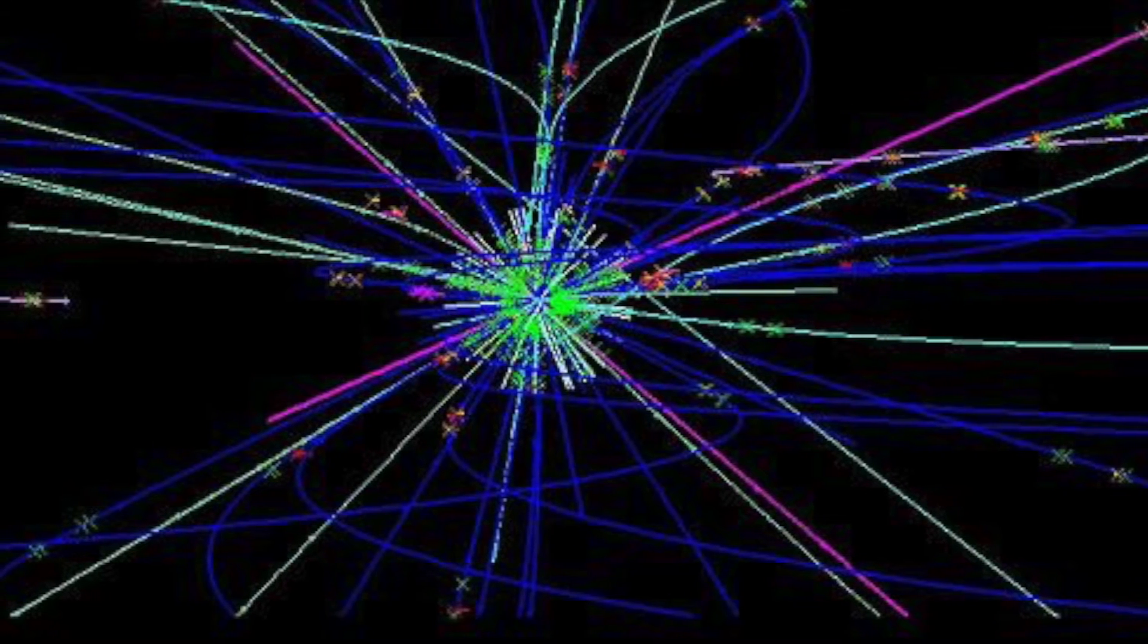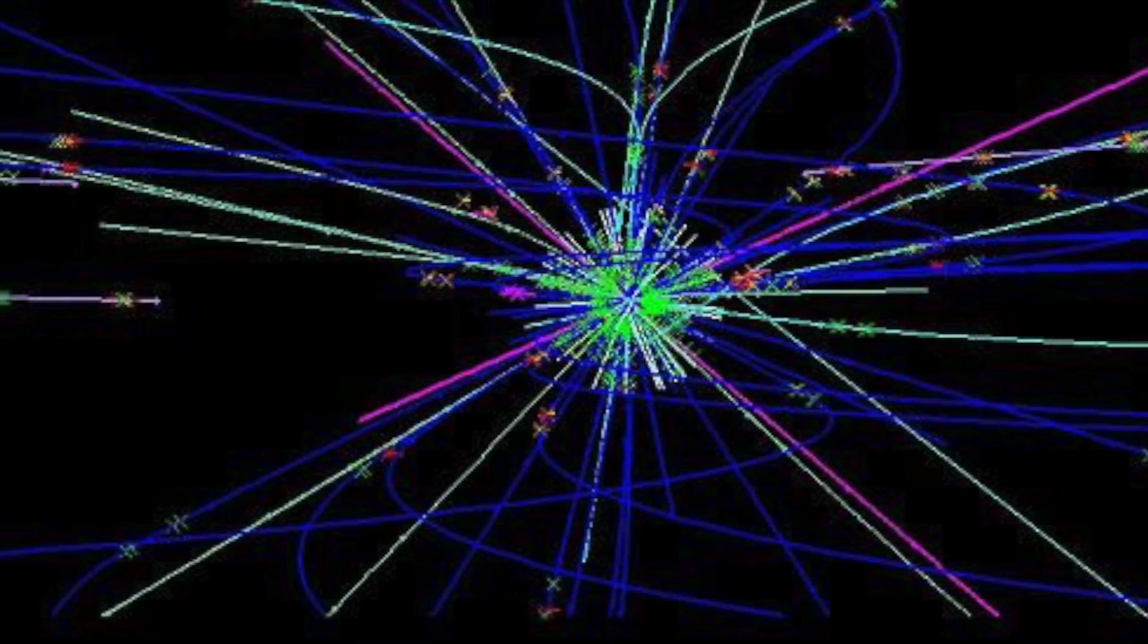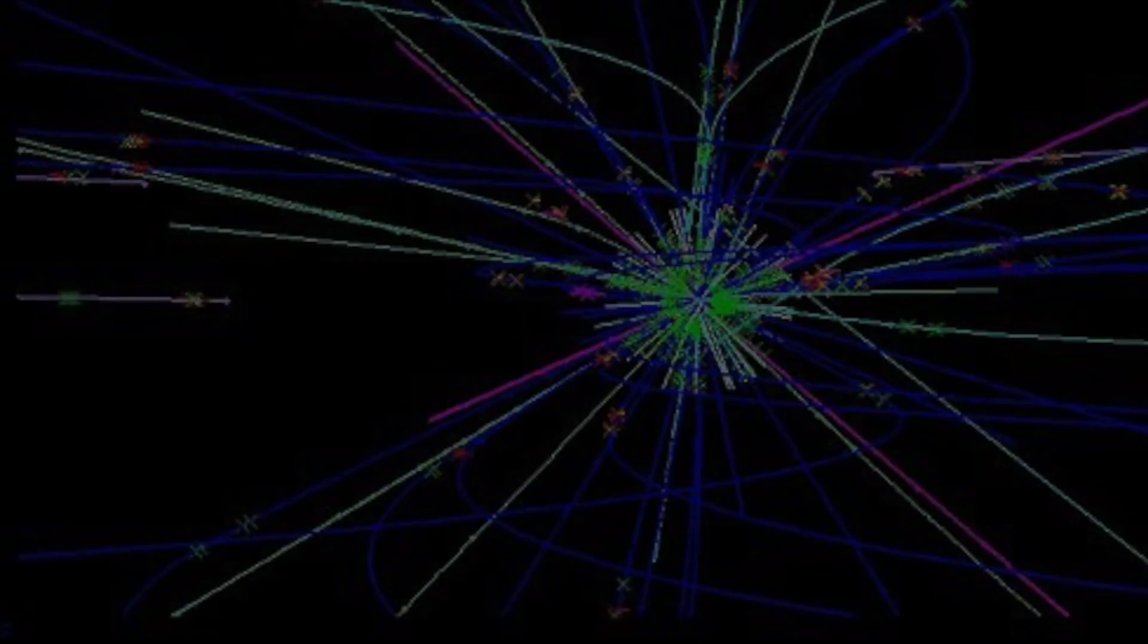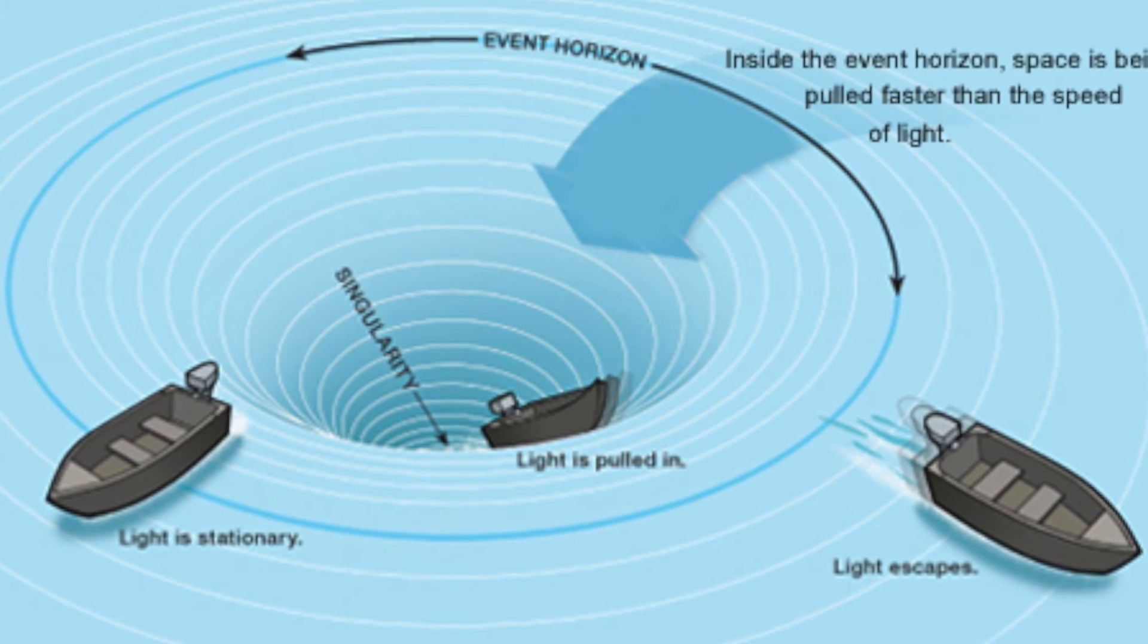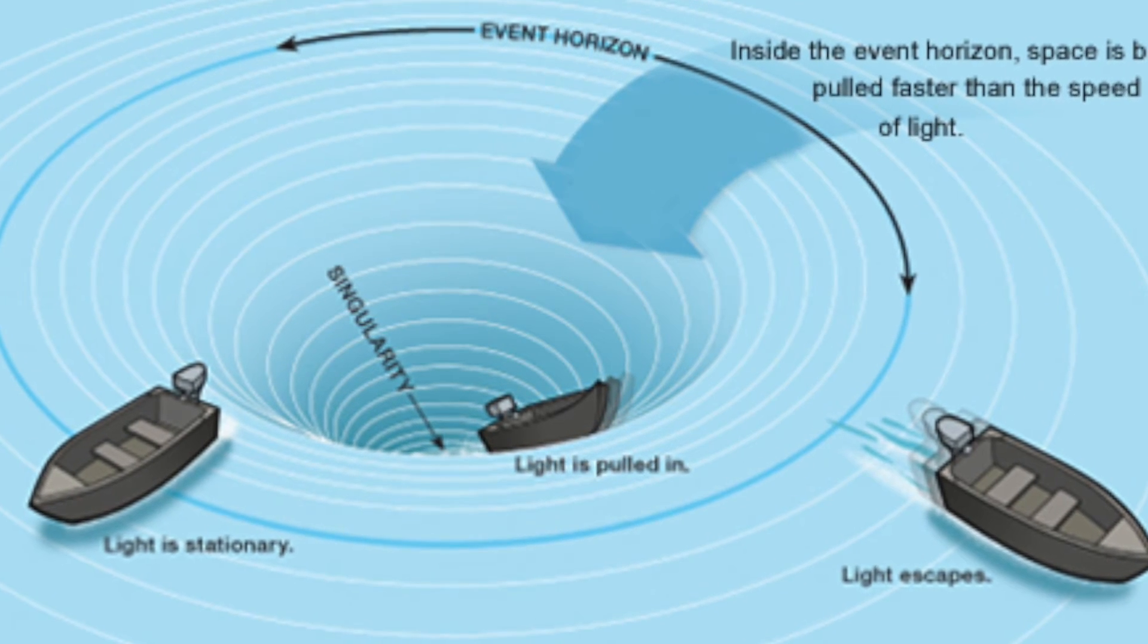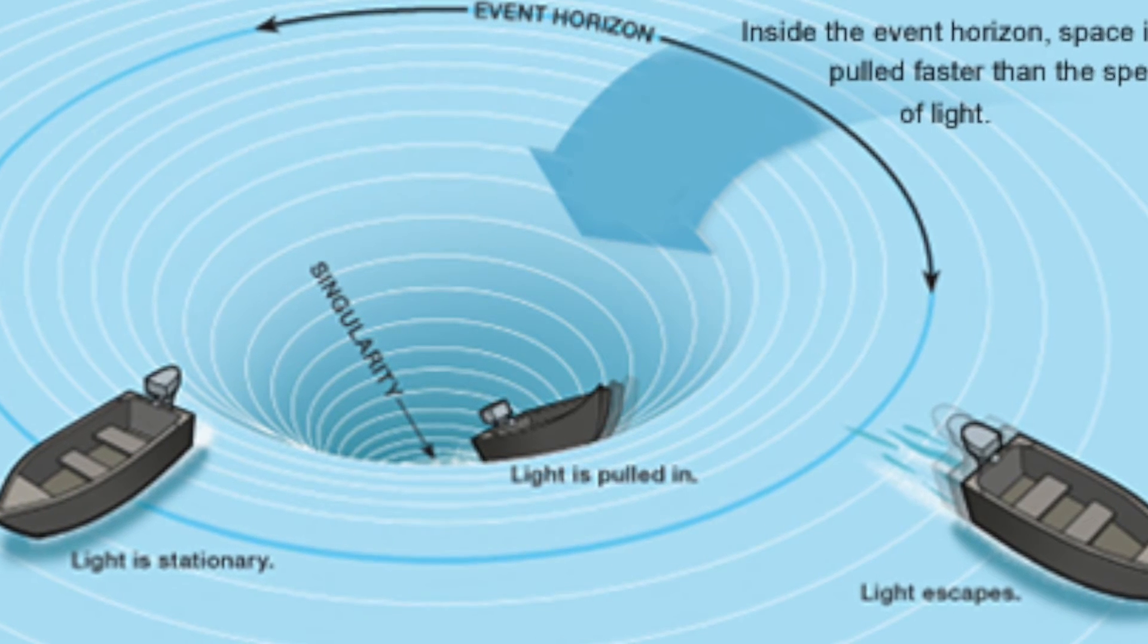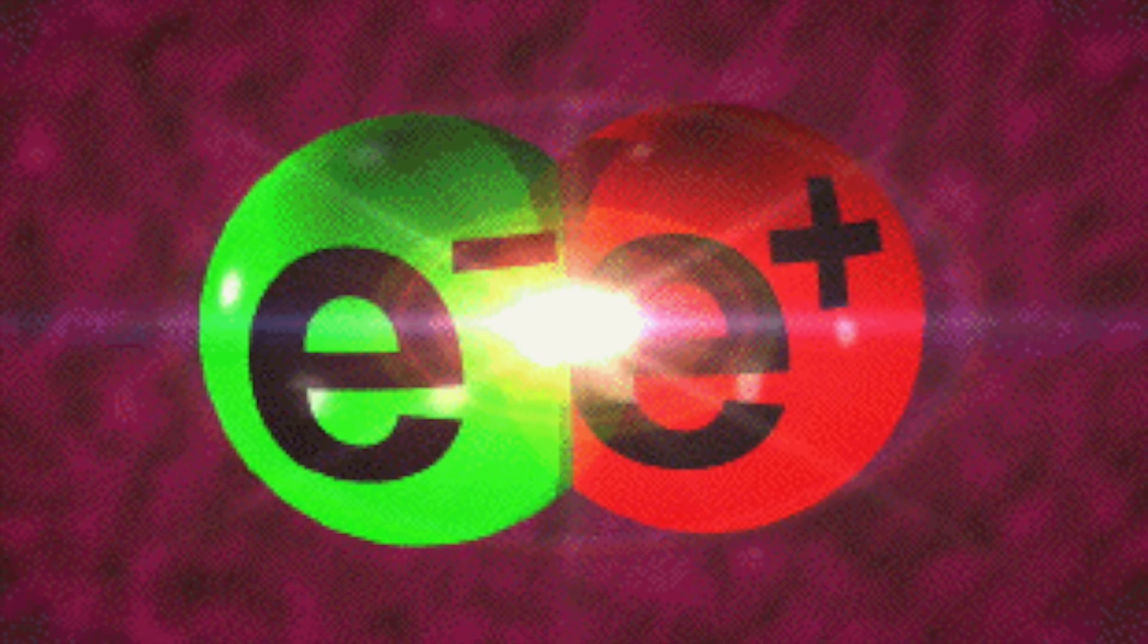So if black holes do evaporate, why exactly do they evaporate? Basically the uncertainty principle of quantum mechanics allows the law of energy conservation to be violated. This only really seems to happen at the quantum level, and it can only really happen through short term durations. The universe is able to produce mass and energy out of nowhere.